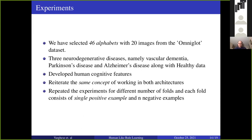During the experiments we selected 46 different types of alphabets from Malayalam characters from the Omniglot dataset, and each alphabet contains 20 images. Regarding the neurodegenerative dataset, we selected four disease categories: dementia, Parkinson's disease, and Alzheimer's disease, along with healthy data. We developed human cognitive features using retinal images and characters. Importantly, we iterated the same concept of working in both architectures — in OSHD as well as in the Siamese network. We followed cross-validation where in each fold we consider a single positive example and N negative examples.